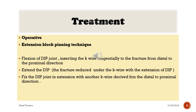In daily practice, operative treatment typically involves the extension block pinning technique. The technique involves flexion of the DIP joint, inserting a K-wire tangentially to the fracture from distal to proximal direction, then extending the DIP joint to reduce the fracture under the K-wire, and finally fixing the DIP joint in extension with another K-wire passed from distal to proximal.